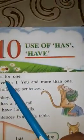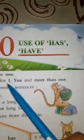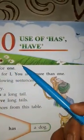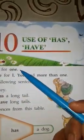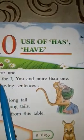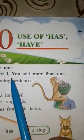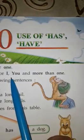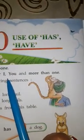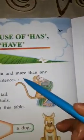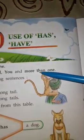Children, 'has' is for one — means we will use 'has' for one person when we are talking about one. And 'have' we can use for 'I' if we are describing ourselves. If you are describing to others, that means 'you,' and more than one — if there will be more than one, that time also we use 'have'.